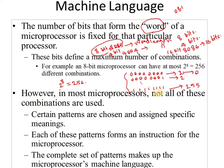In most microprocessors, not all of these combinations are used, because certain patterns are chosen and assigned specific meanings. Each of these patterns forms an instruction for the microprocessor, and the complete set of patterns makes up the microprocessor's machine language.